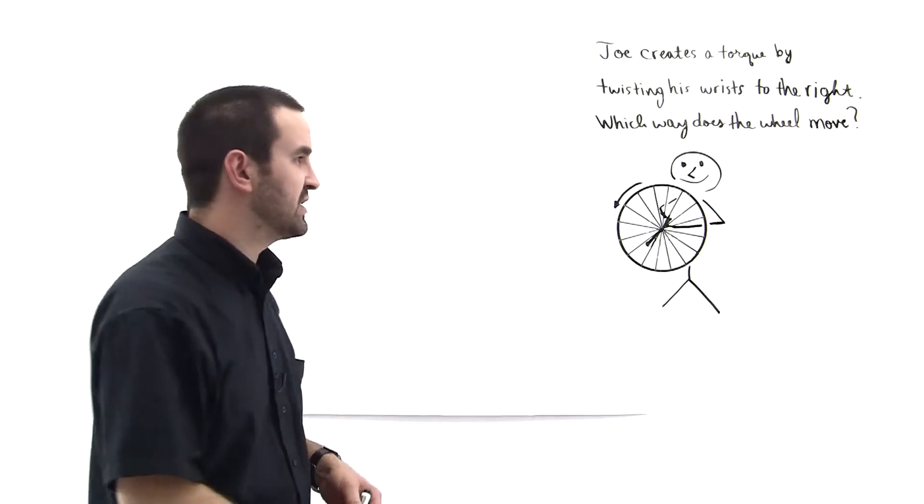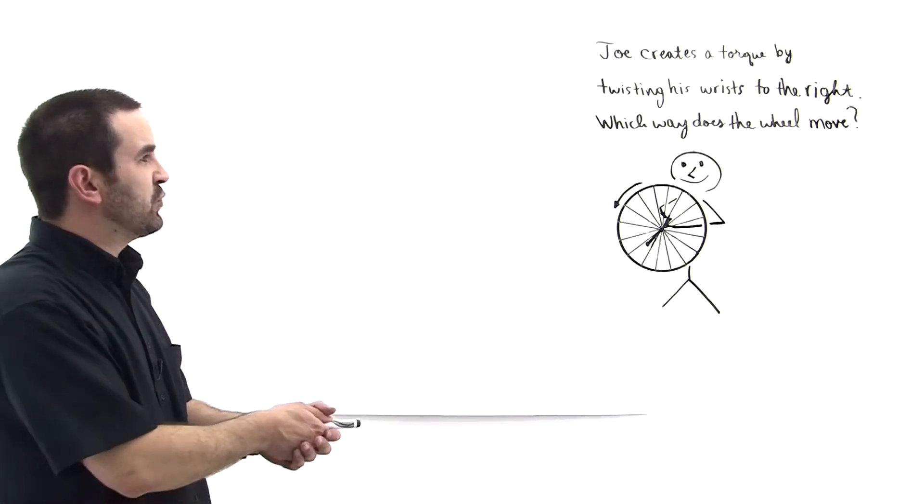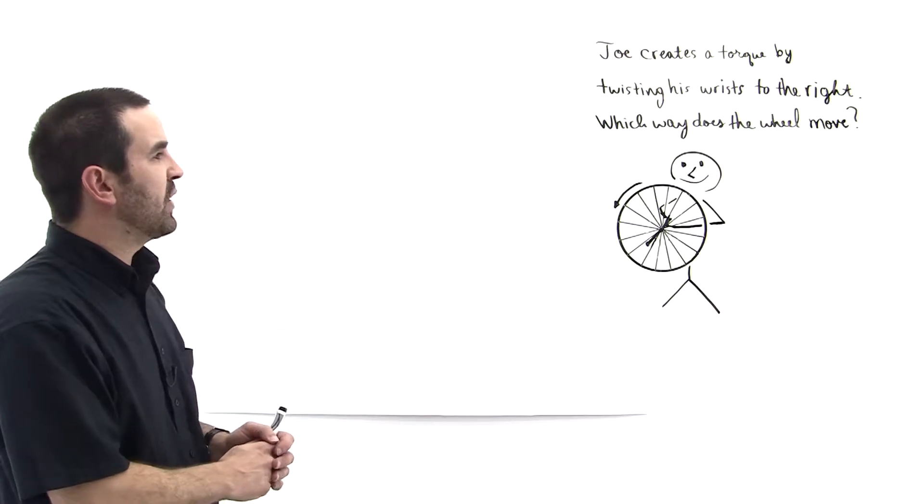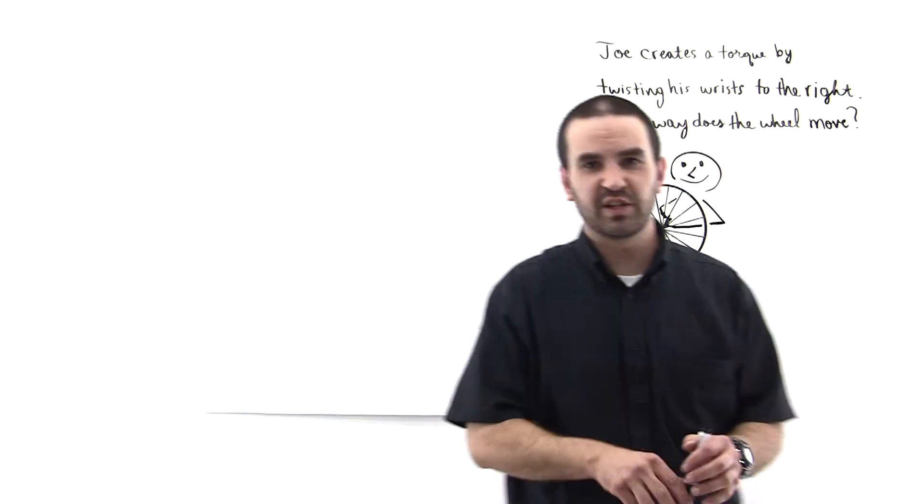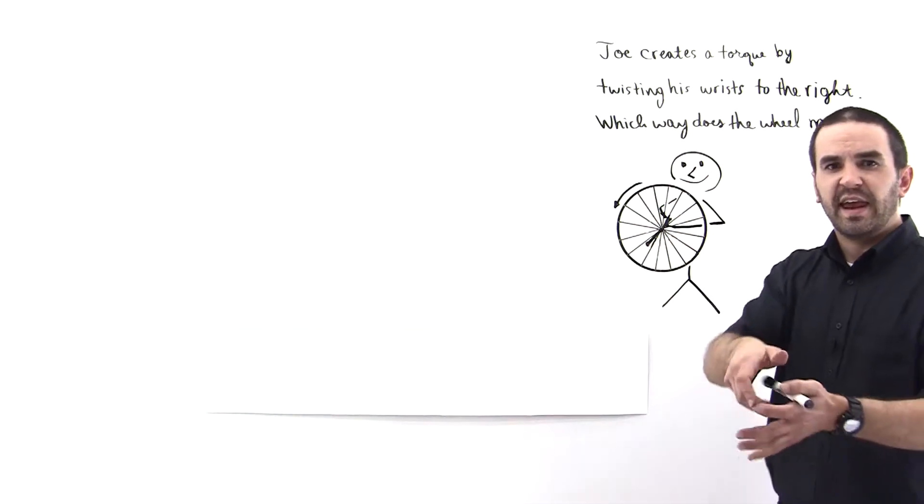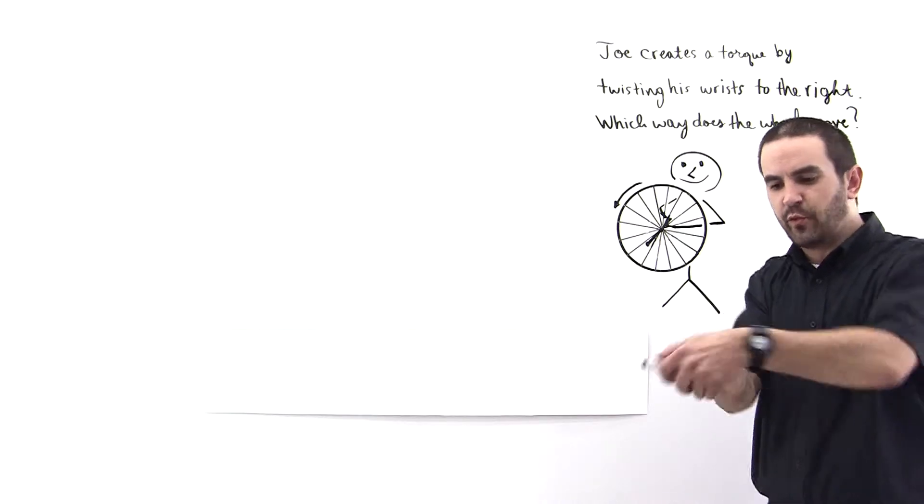Joe is holding this rotating wheel as shown and he twists his wrist to the right. Which way does the wheel move? In this situation the wheel is turning like this and he takes his wrist and twists them to the right.